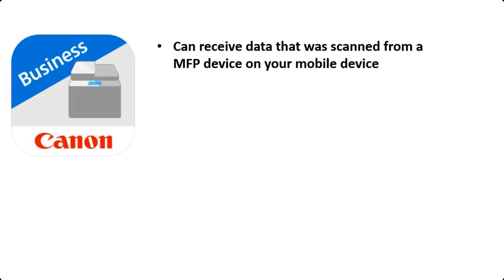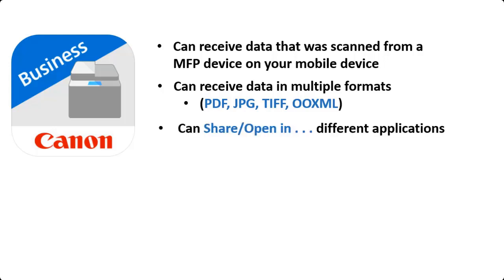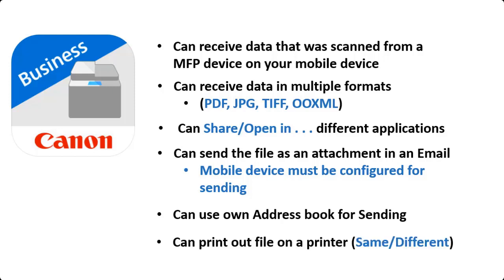Scanning. With Canon Print Business, you can receive data that was scanned from an MFP device to your mobile device. You can receive the data in multiple formats such as PDF, JPEG, TIFF, and OOXML for editing. You can share or open in different applications, send the file as an attachment in an email, use your own address book for sending, and also print the file on the same or a different printer.